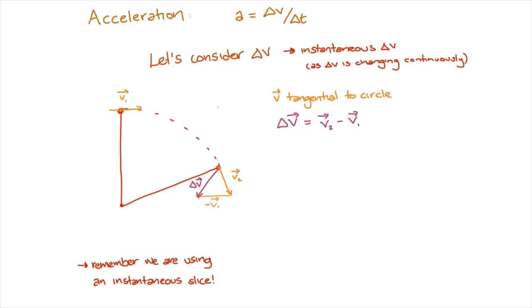We now have a triangle of three sides: v1, v2, and delta v. To get an expression for delta v, we'll need to work out some information about the angles and the sides of the triangle v1, v2, and delta v.